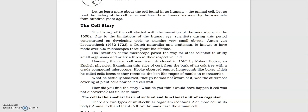His invention of the microscope paved the way for other scientists to study small organisms and structures in their respective fields. However, the term cell was first introduced in 1665 by Robert Hooke, an English physicist examining thin slices of cork from the bark of an oak tree. With a crude compound microscope, Hooke observed empty honeycomb-like boxes which he called cells because they resembled the box-like rooms of monks in monasteries. What he actually observed, though he was not aware of it, was the outermost covering of plant cells, now called cell wall.